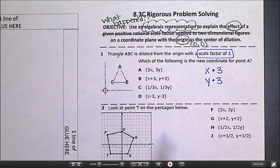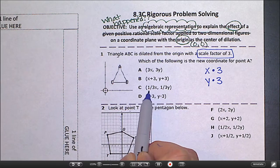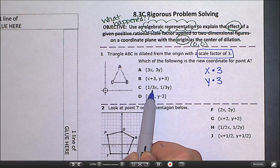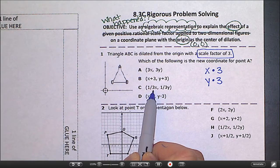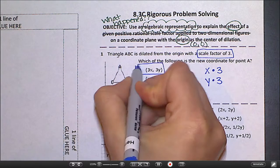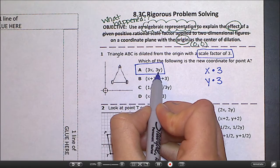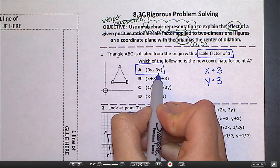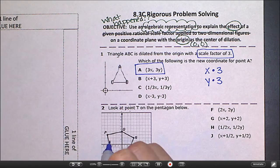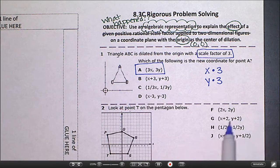So which one of these matches it? It's not x plus 3 and y plus 3. One-third x would be if the scale factor was 1/3. And we're not subtracting. It's this one right here. This is x times 3 or 3x and y times 3 or 3y. And that's all we're doing. So basically we're just going to stick the scale factor in front of x and in front of y to multiply it. Easy peasy.